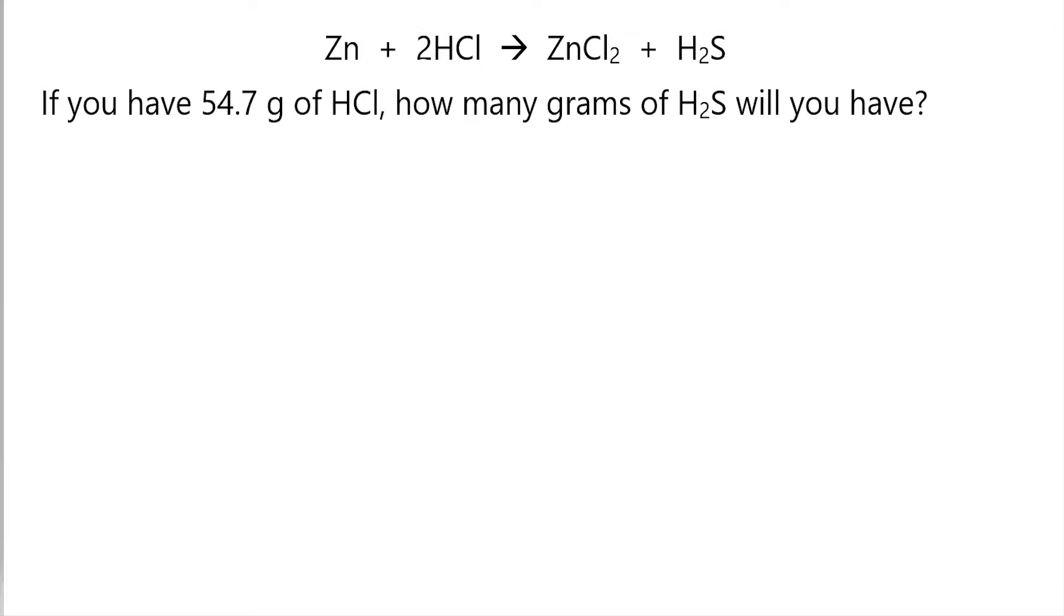First, we need to know the molar mass of our two substances. We find the molar mass by looking at the periodic table and adding up their masses. So, the molar mass for HCl is equal to 36.5 grams for every one mole.